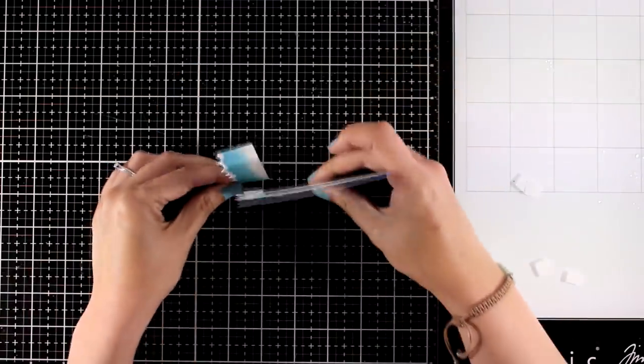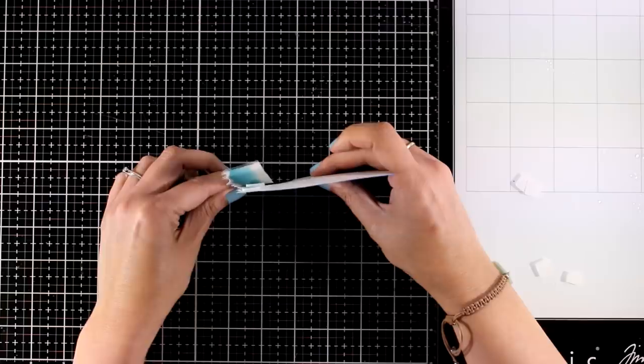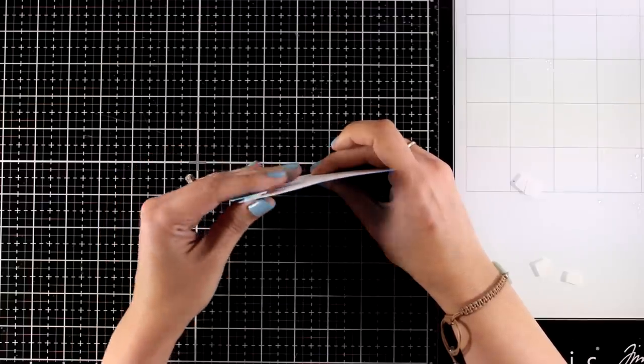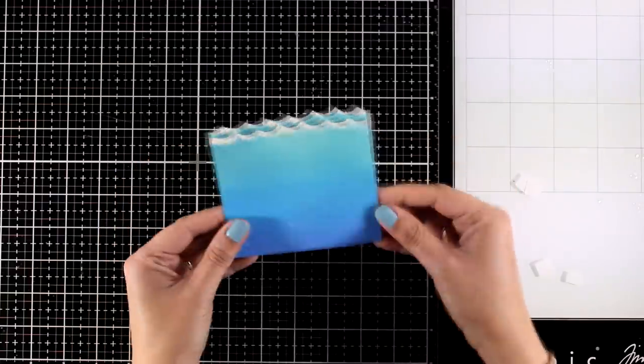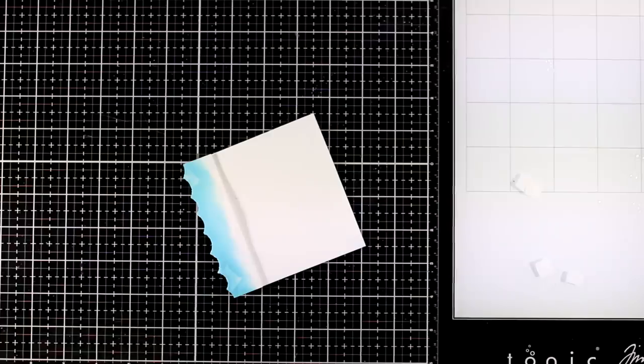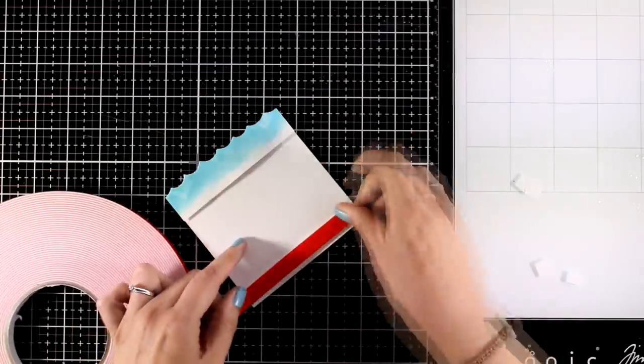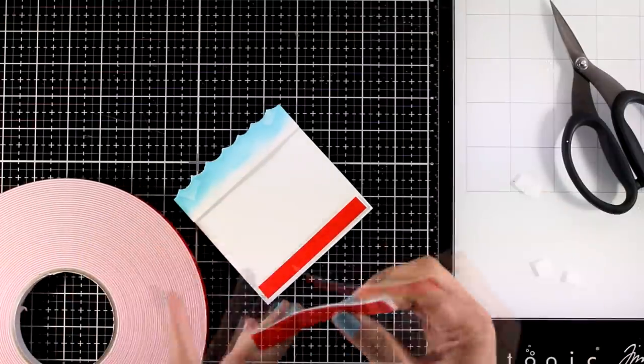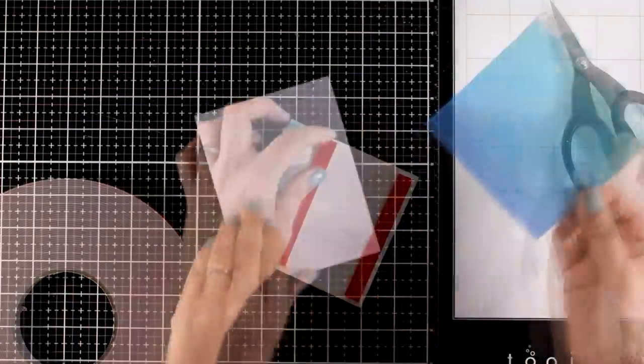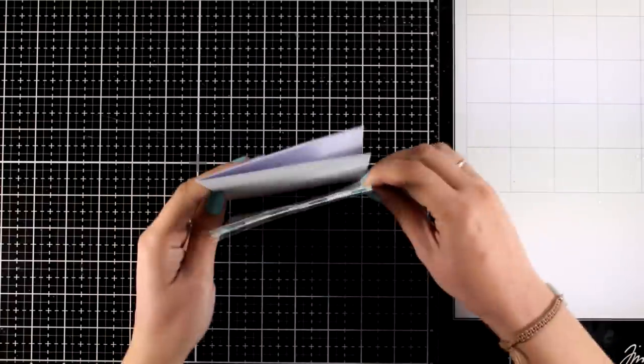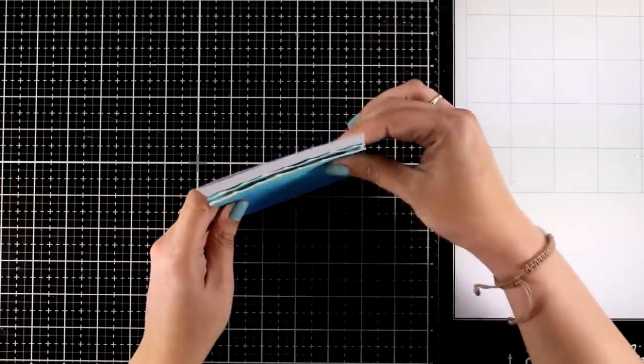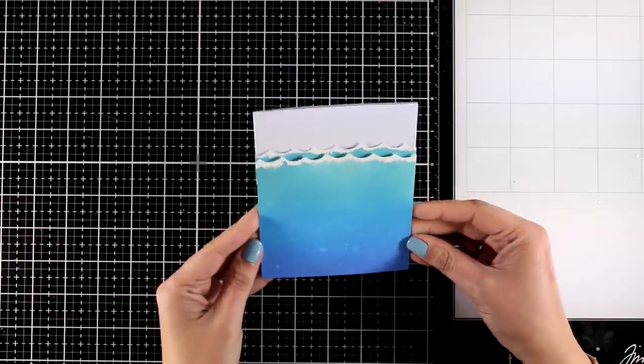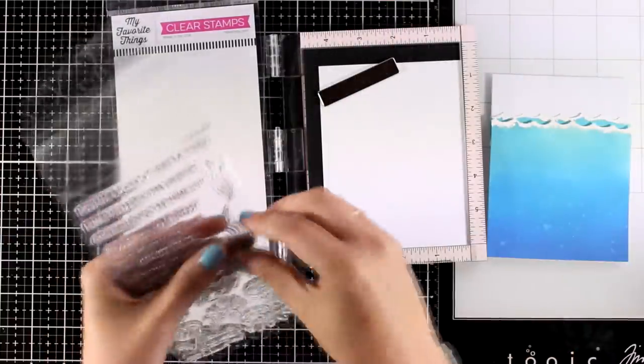This way I have some dimension with waves one on top of the other. Now I'm going to add some foam tape at the bottom of the panel to even it up and stick this panel on top of a pre-folded card. I have one here which is four and a quarter by five and a half. And now of course my ocean is ready, all I have to do is to start adding little focal points on top of that.